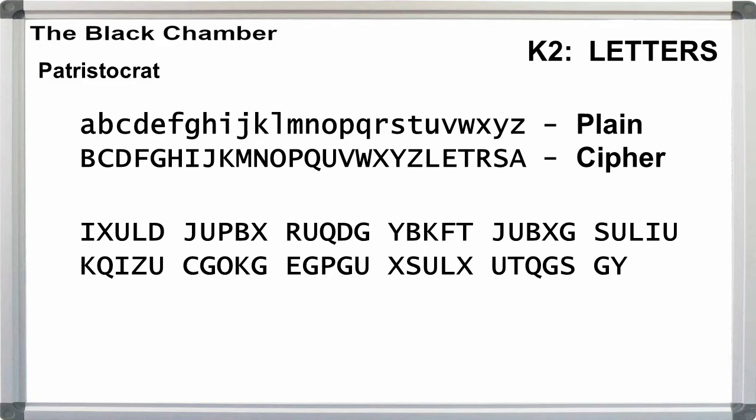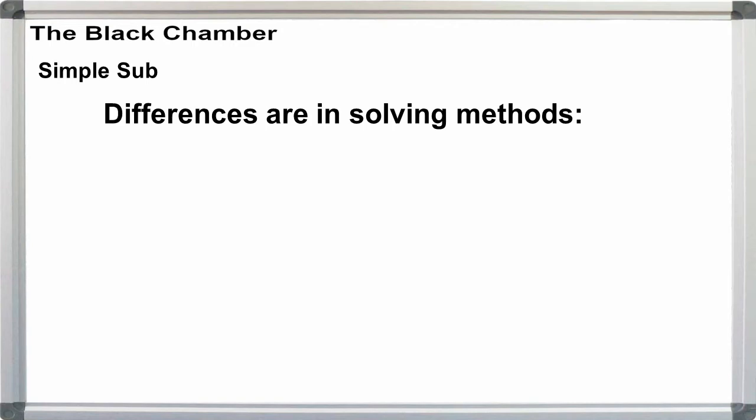Without word divisions, or for the patristocrat form, the spaces and punctuation are stripped out, and the letters are grouped in fives. The main differences between the two types, with and without divisions, are in the approaches to solving them.